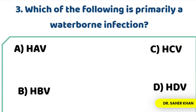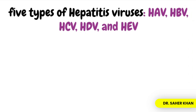Our next question: which of the following is primarily a waterborne infection? We know that there are five types of hepatitis viruses: HAV, HBV, HCV, HDV, and HEV. Out of these, two are waterborne — HAV and HEV.